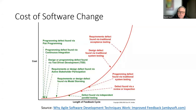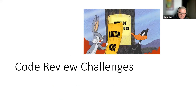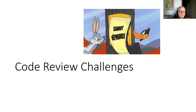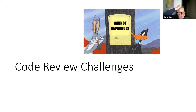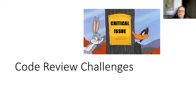You can shift even further left with things like pair programming or mob programming, which are effective at catching issues even before the code review process. We're not talking about those today, but the idea of shifting left is a really good principle. After all these advantages, you'd think everybody is doing code reviews — but my experience is no. There are many organizations that are not implementing code reviews.